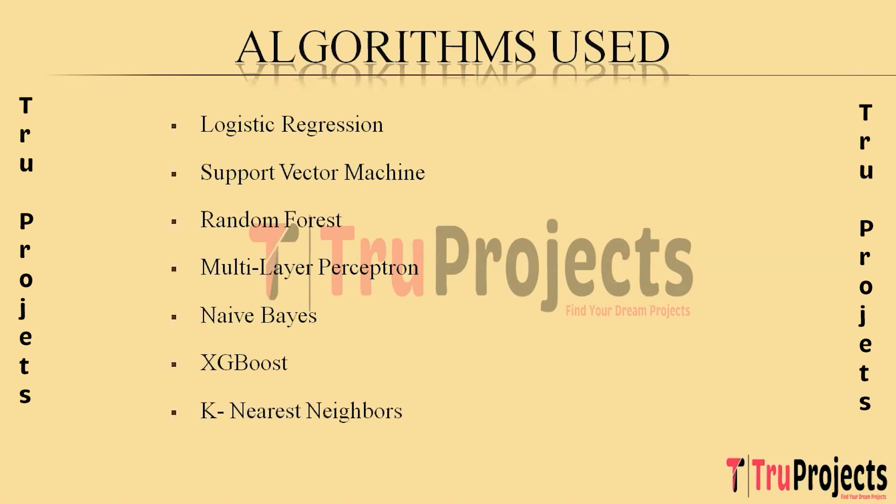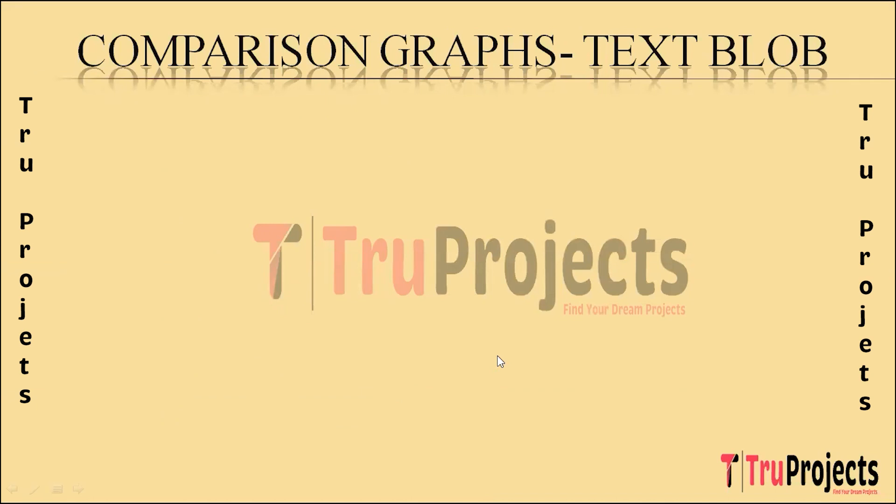The last algorithm is K-Nearest Neighbors (KNN), a simple yet effective algorithm that classifies data points based on the majority class of their nearest neighbors. In sentiment analysis, KNN is employed for its simplicity and adaptability to varying data distributions, making it a suitable choice for exploring patterns in the monkeypox-related Twitter data.